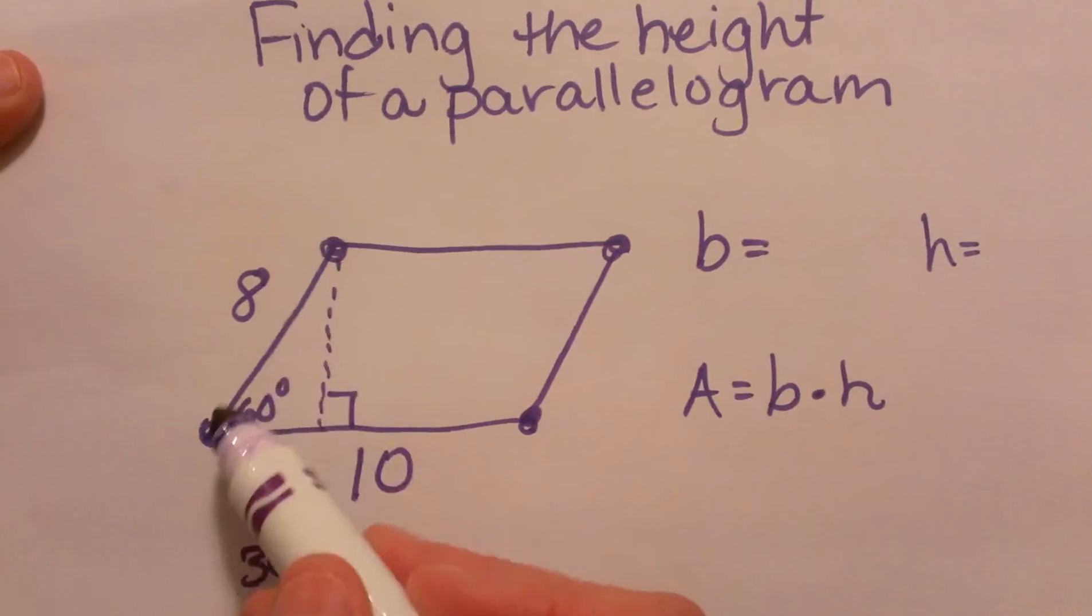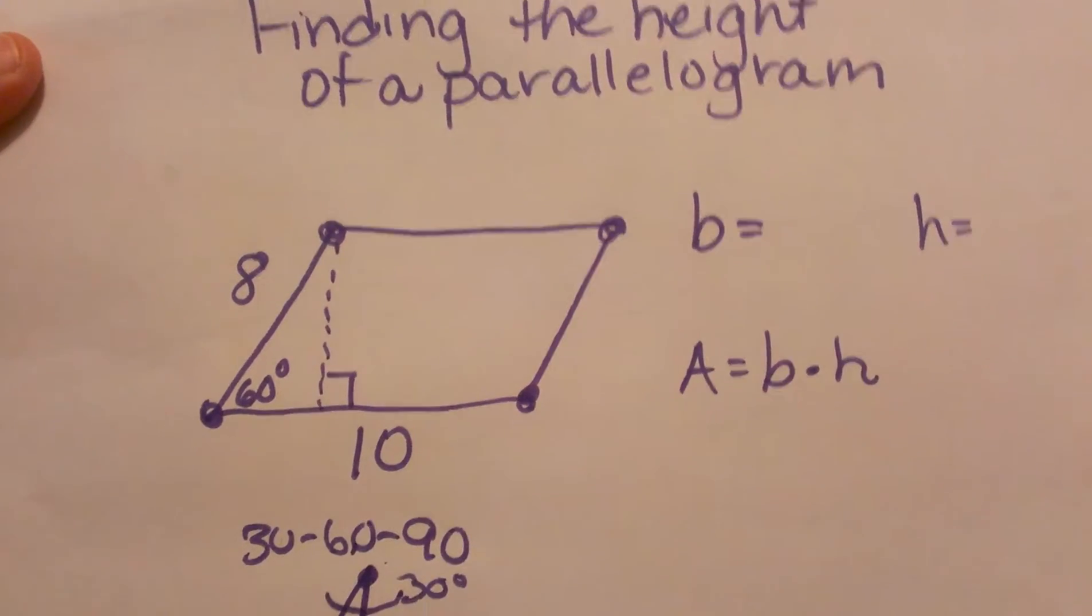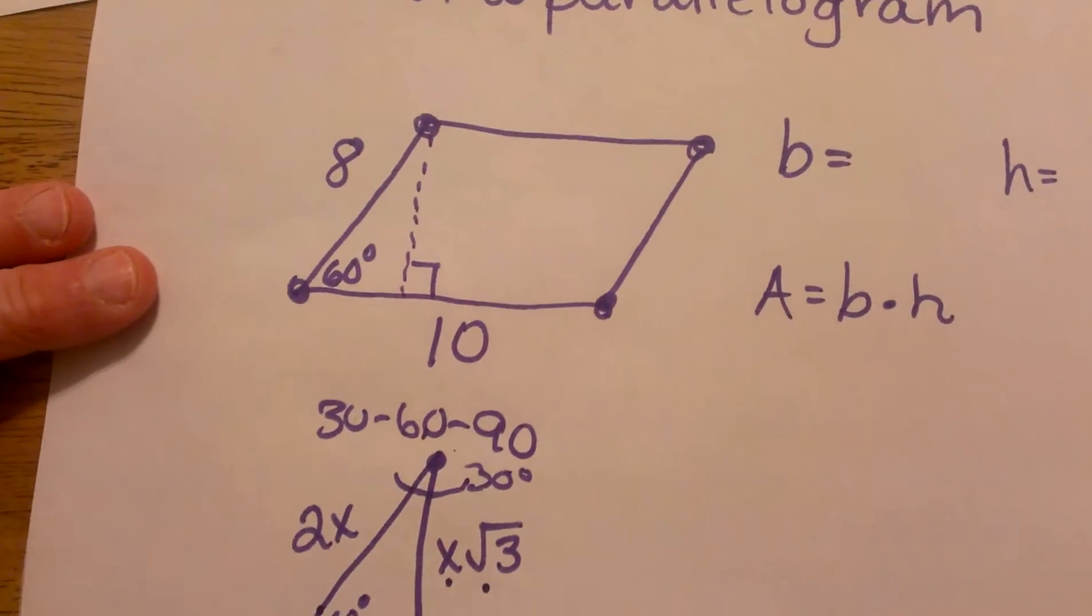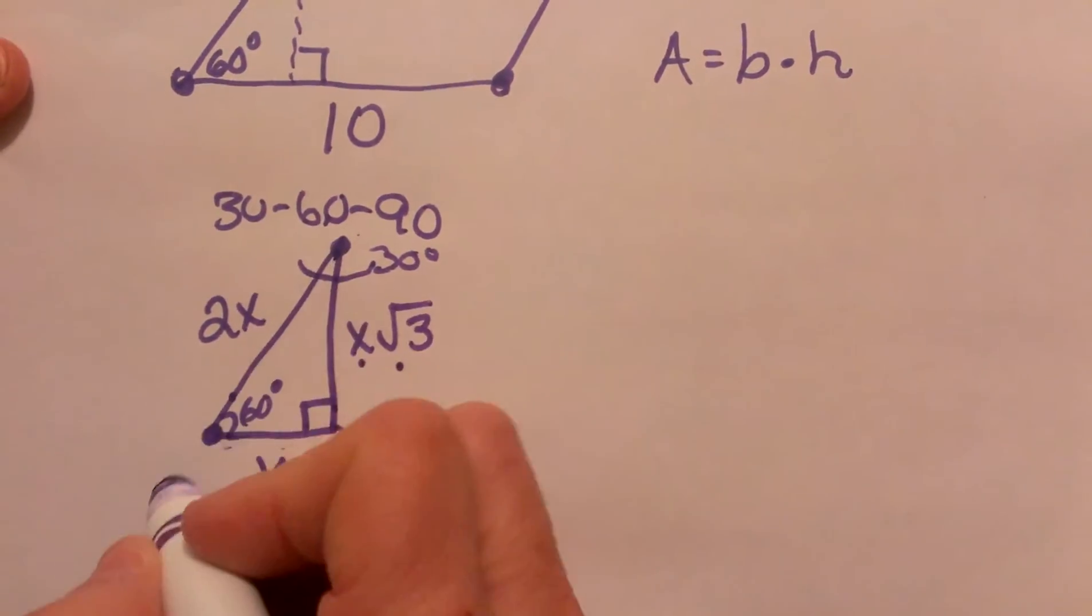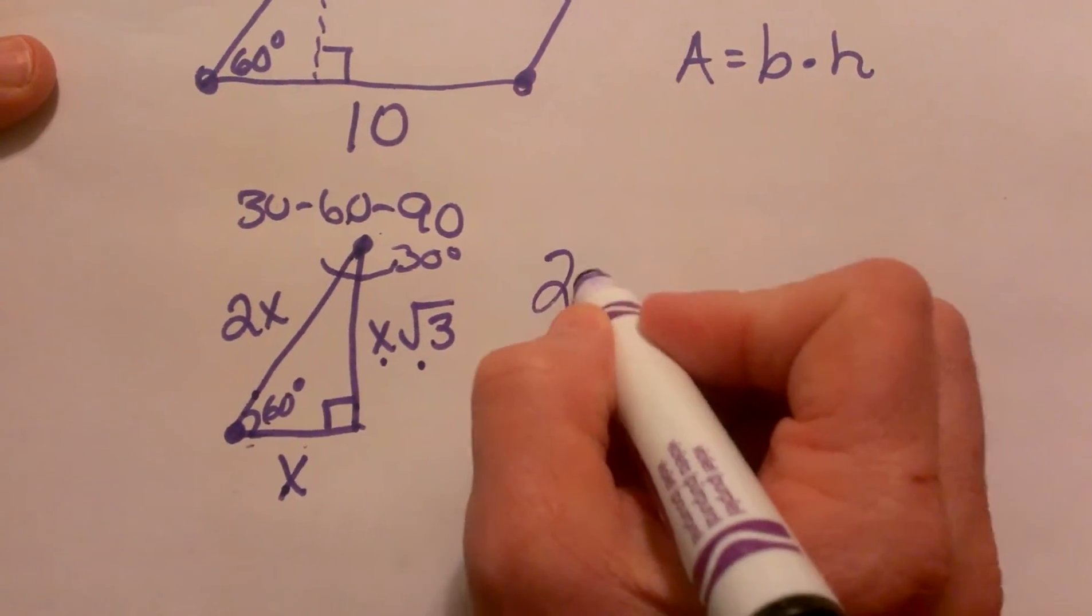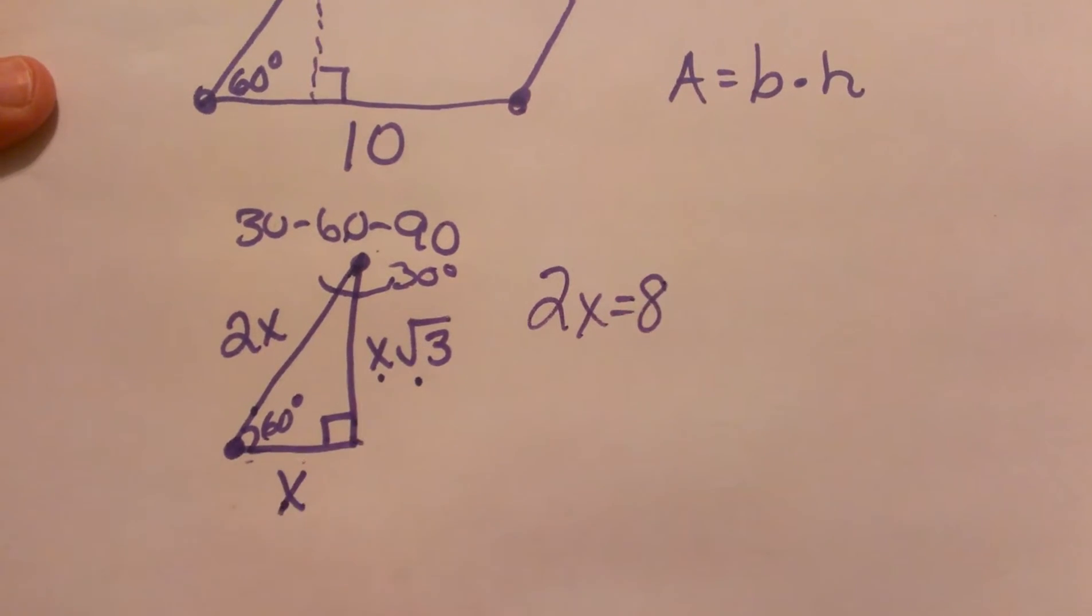I have the hypotenuse in my triangle. So I'm going to set my hypotenuse equal to 8. The hypotenuse is 2x, and 2x equals 8.